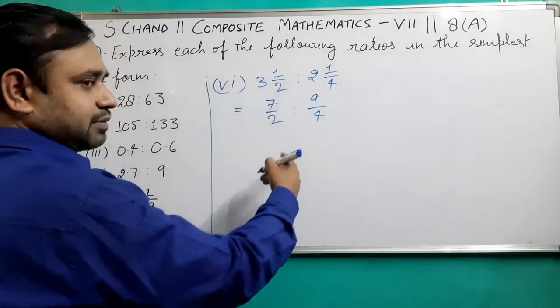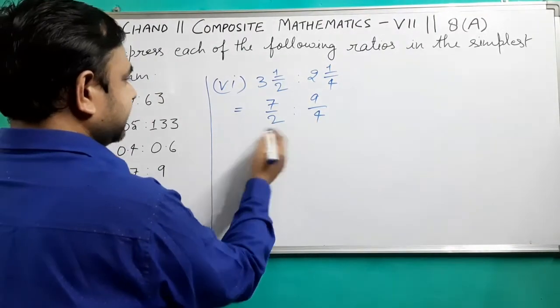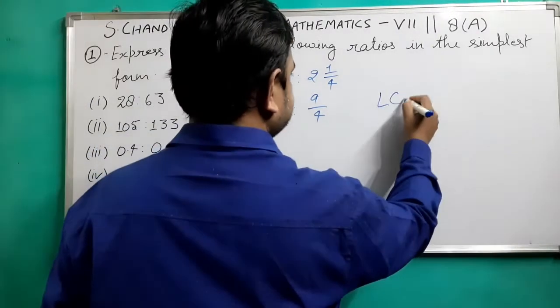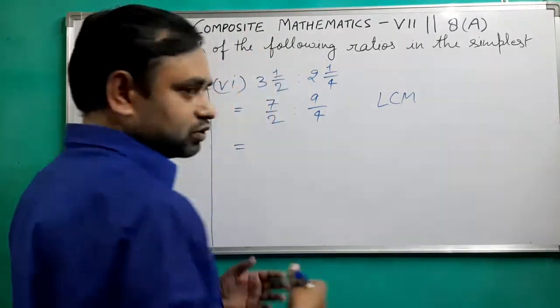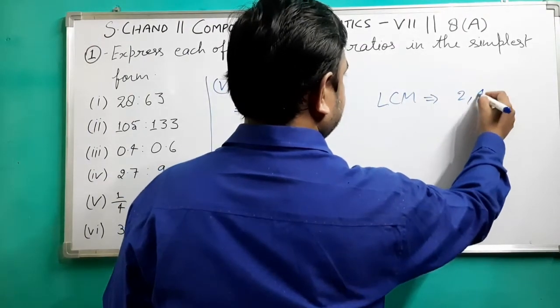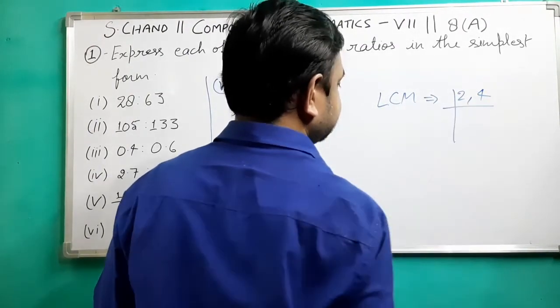Now we will take the LCM, now we will take the denominators LCM. That will be 4 and that will be the LCM. If you are in seventh, then you should be able to write it compulsory.